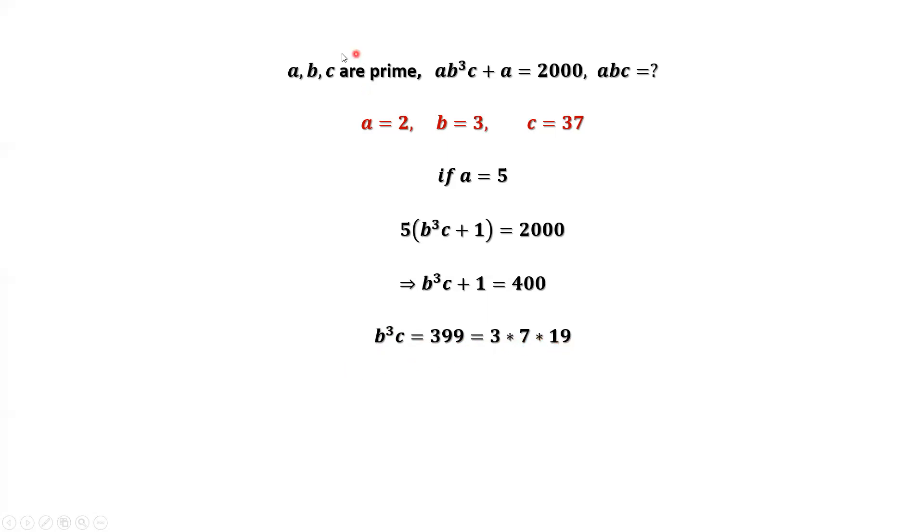Because B and C are prime, it is impossible to have this kind of format. This implies A cannot be 5. The only answer A is 2.